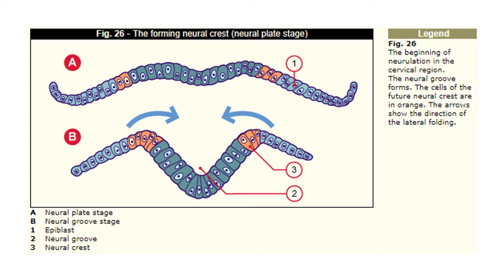This shows the beginning of neurulation in the cervical region — the neural plate stage — where the neural groove forms and the cells of the future neural crest are shown in orange. The arrows show the direction of lateral folding. Number one is the epiblast, number two is the neural tube or neural groove, and number three is the neural crest. The formation direction is inward, creating a lateral folding.